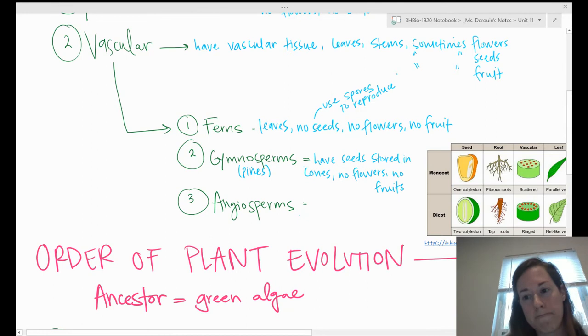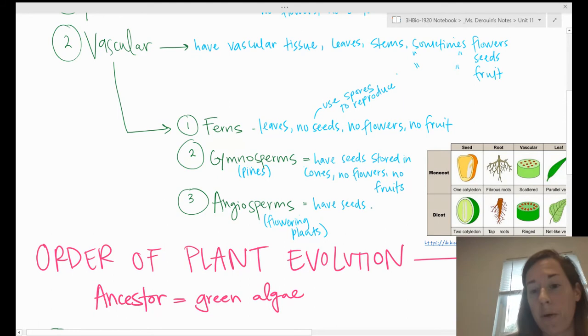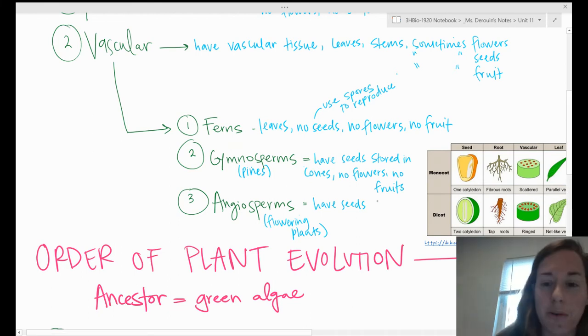The last one is angiosperms, which are flowering plants. They have seeds which are stored in the flower and eventually the fruit. They have actually an ovary inside the flower. Some plants have multiple ovaries, and that ovary actually becomes the fruit, which is kind of crazy, but that's how it works. They have seeds, flowers, and fruits.